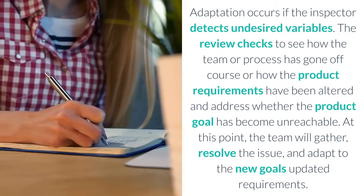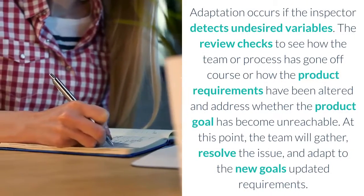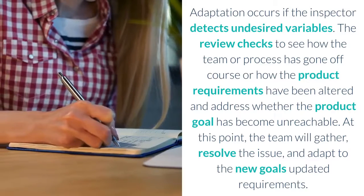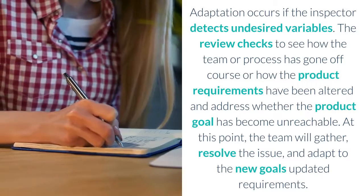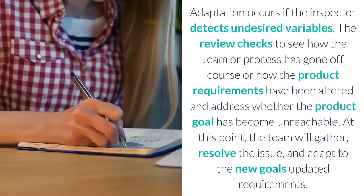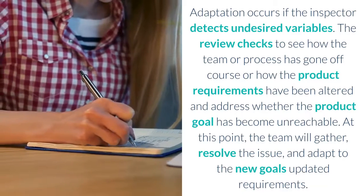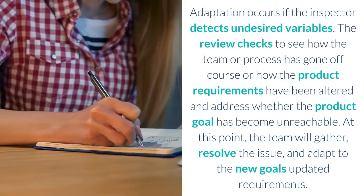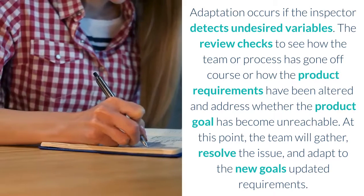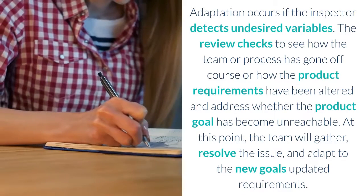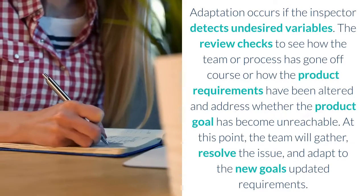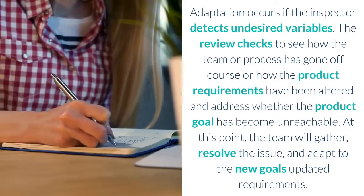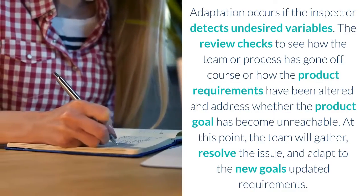Adaptation occurs if the inspector detects undesired variables. The review checks to see how the team or process has gone off course, or how the product requirements have been altered, and addresses whether the product goal has become unreachable. At this point, the team will gather, resolve the issue, and adapt to the new goal's updated requirements.